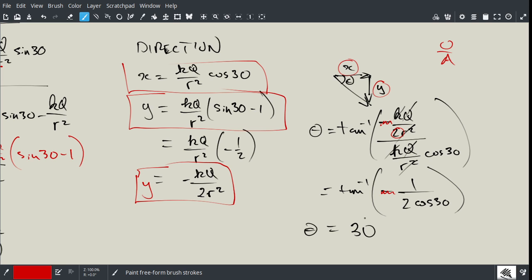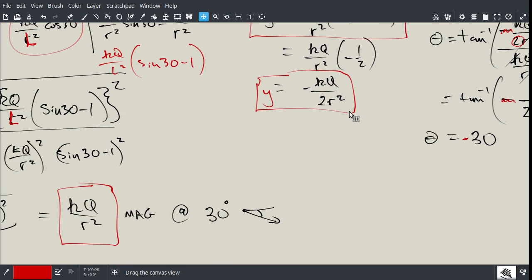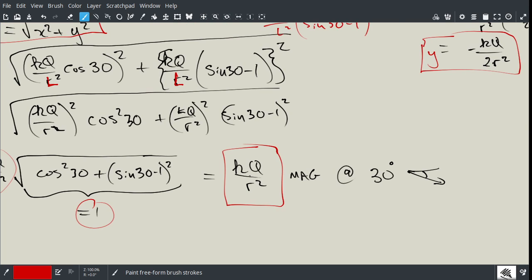Now what if you left the negatives in? Well, if you left the negative in, you'd get negative 30, which is perfectly fine because negative 30 is here. If you don't put the negative in, you just get 30, but then you can look at your diagram and go, where is that theta? X was positive, Y was negative, so it's going to be down in this direction here. So now we can simply write out our answer. Our answer is magnitude kq over r squared and direction 30 degrees down from the horizontal going towards the right. And if you want to specify in terms of north, east, south, and west, you could say it's 30 degrees south of east.